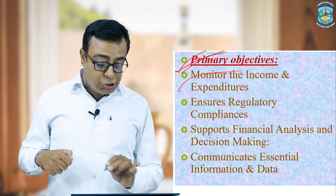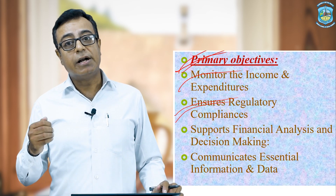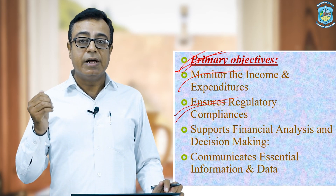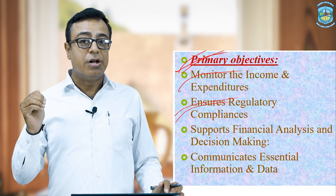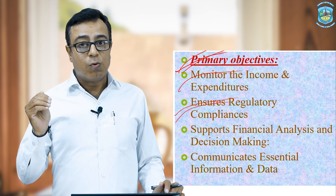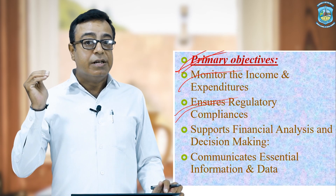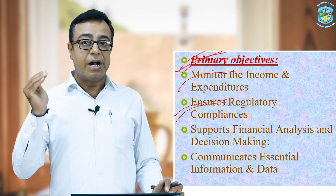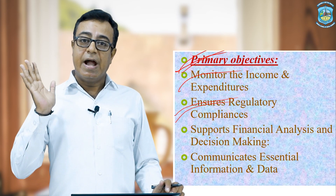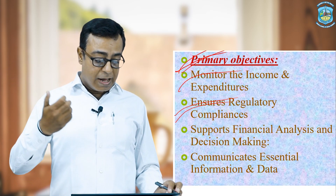The next primary objective is to ensure regulatory compliance. The disclosures and information given in corporate financial reporting is legal, mandatory information required by the government and government authorities. By this particular disclosure, the company ensures it is following all government rules, provisions, and laws, and these are mentioned in the corporate financial reporting.